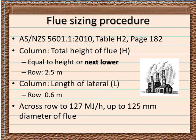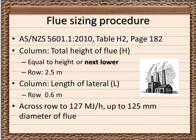We now go to Table H2, which is for low heat loss materials and indoor locations. Looking down the total height of the flue column, we go down to 3 metres. But step 2 says to go to the height equal to the flue height or the next lower flue height. Therefore, because this flue is 2.7 metres in height, we must go down to 2.5 metres. We go across to 0.6 metres and move across that row until it shows greater than 120 megajoules. We find the 127 megajoules figure, which is above the 120 megajoules requirement. Moving to the top of that column indicates that a 125 millimetre diameter flue is necessary.